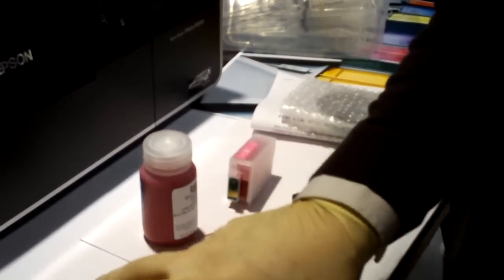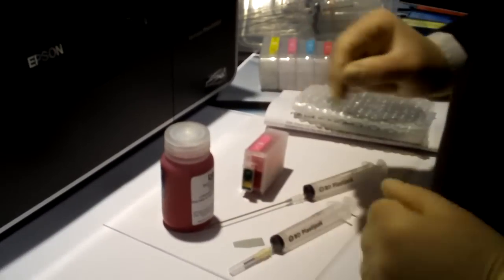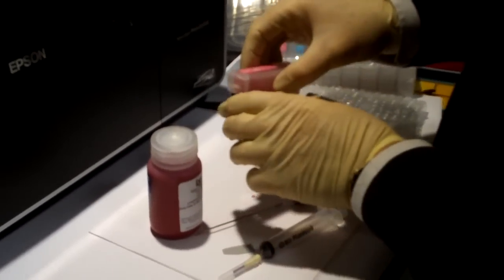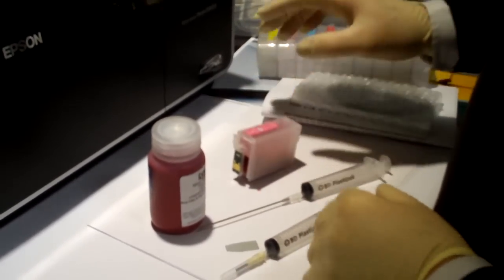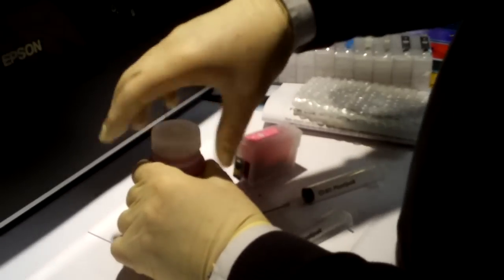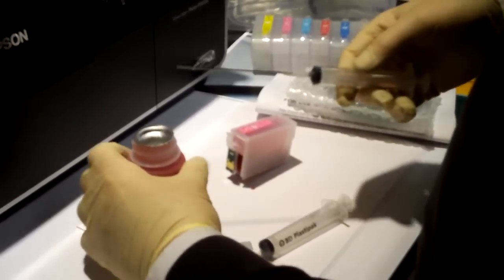So let's go through the process of actually doing one cartridge. We've got one here prepared. So we've got a new cartridge. What we're going to do is we're going to take our ink. In this case it's Lyson ink.